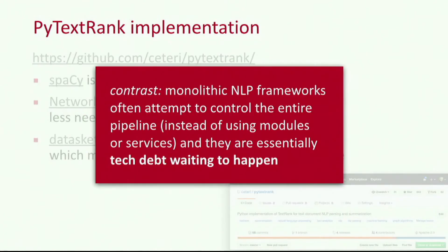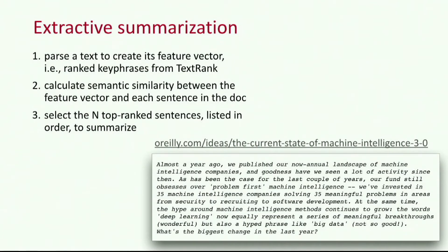One of the interesting things is you can go back and reevaluate the text. If you've got that feature vector and the graph, you can look at every sentence and see what's the vector distance from a sentence to my feature vector. You can go through the entire document, rank those sentences, take the top ones, put them back into their original order, and you come up with a summarization. This technique is called extractive summarization.